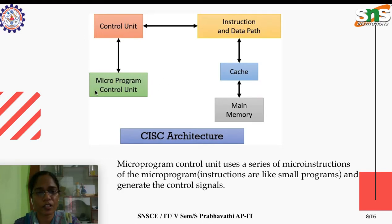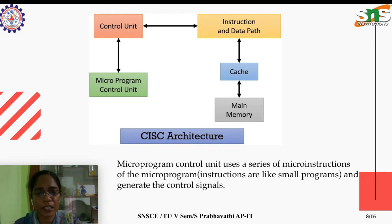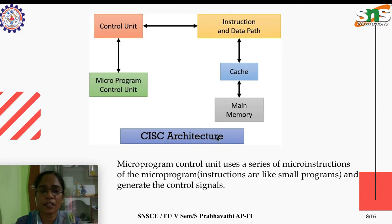The micro program control unit generates control signals using a series of micro instructions. One complex instruction looks like a smaller program — we call it a micro program. The machine depends on a series of micro instructions to execute a single complex instruction. The micro program control unit generates the required control signals to carry out instruction and execution flow.